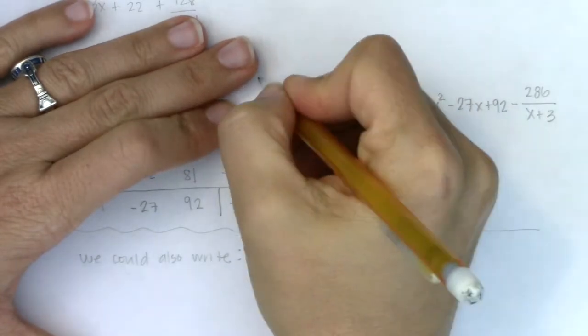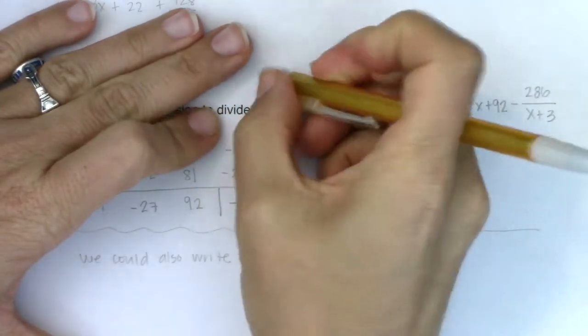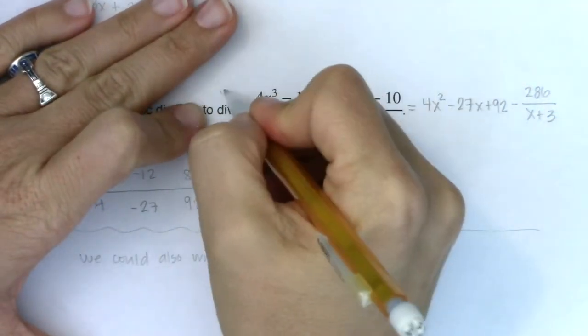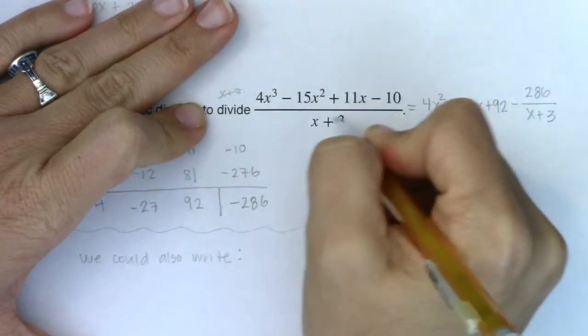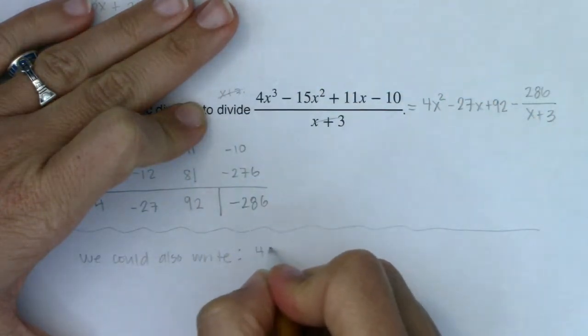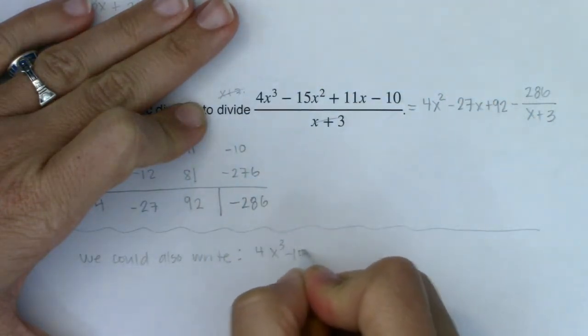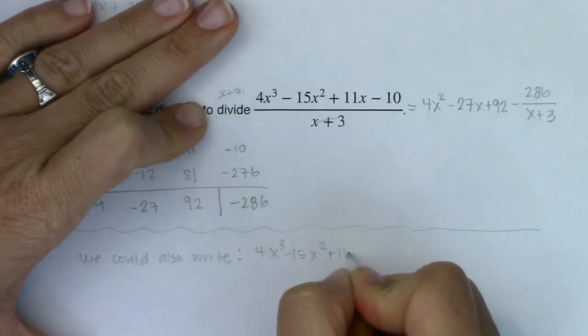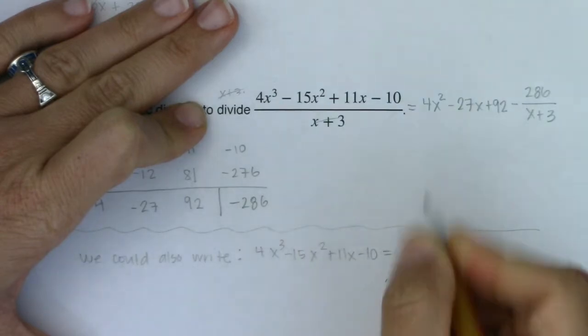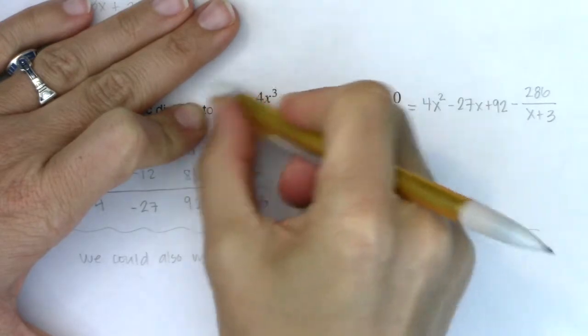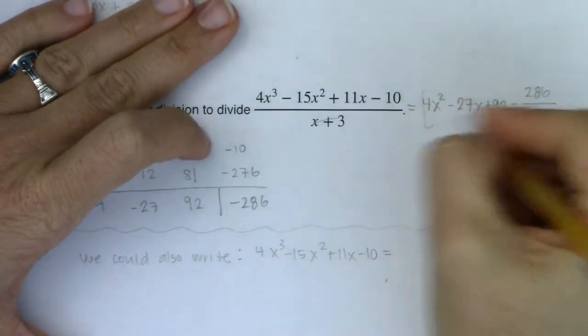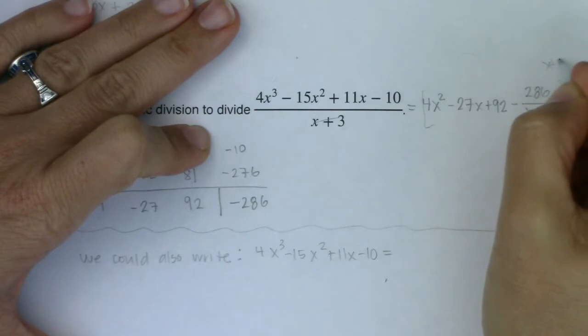If I did that, if I multiply this term by the LCD of x plus 3, actually let me put it over here so you can see it. If I multiply this by x plus 3, we know these are going to cancel. So I would get 4x cubed minus 15x squared plus 11x minus 10. That would be equal to, if I multiply the right side, if I multiply all of this by x plus 3, well, these three terms get multiplied by x plus 3.